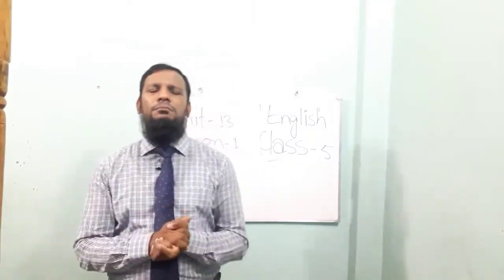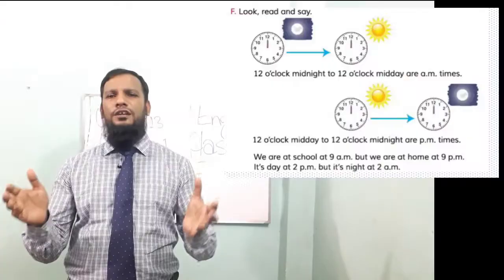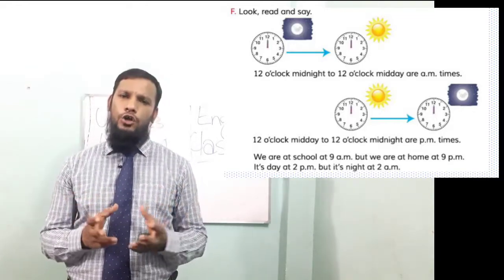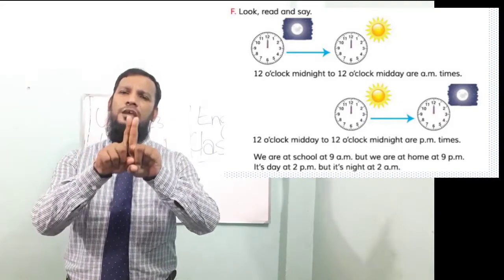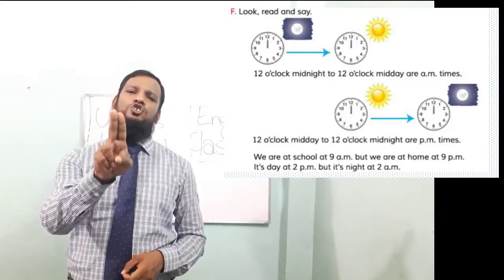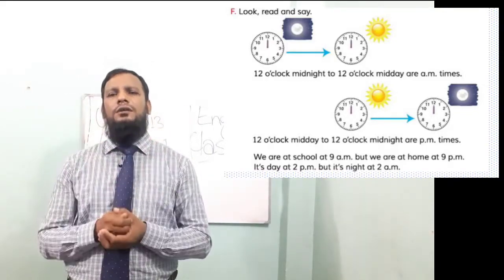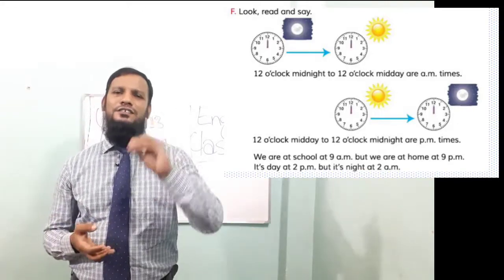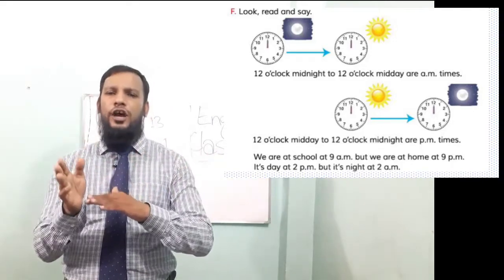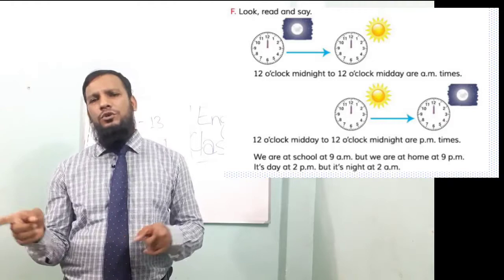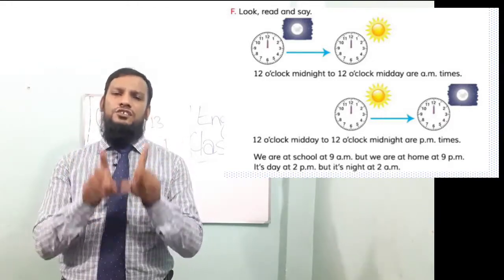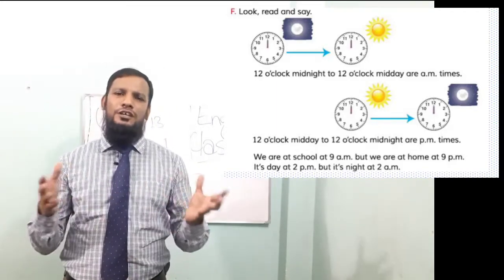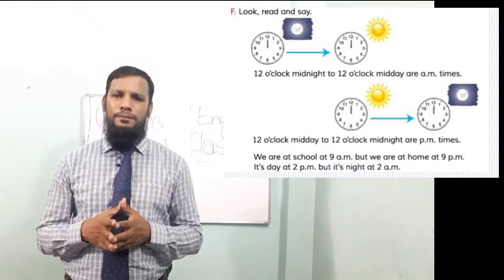Now let's see more activities. In picture one we can see a clock where both hands are striking at twelve, and the picture shows a dark scene with a moon, symbolizing nighttime — so it's twelve o'clock midnight. In another picture both hands are also at twelve, but there is a sun, so it is twelve o'clock midday.